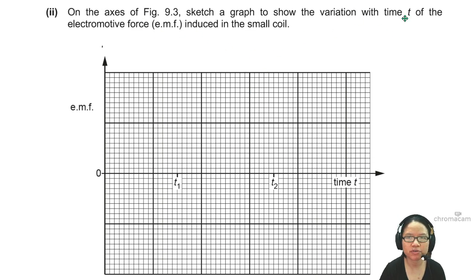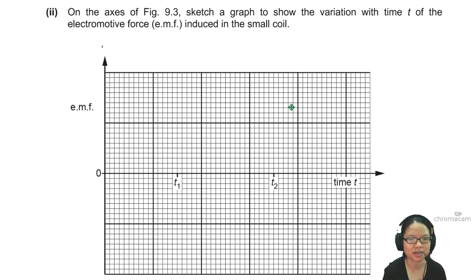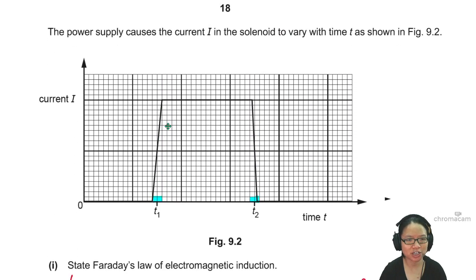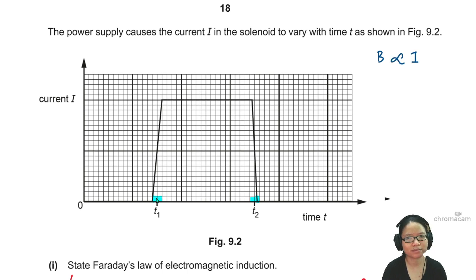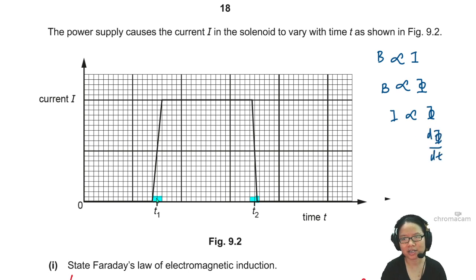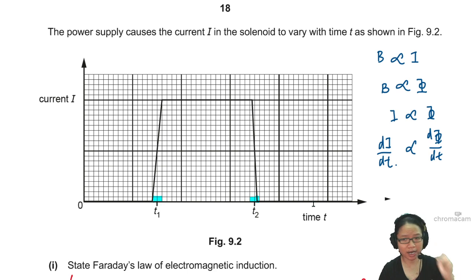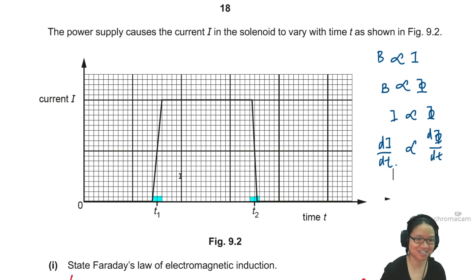Sketch the variation of the EMF induced in the small coil. EMF will only be induced if there is a change in current, because when the current changes, there's a change in flux — B is proportional to I, and B is also proportional to flux. So I is proportional to flux, which means dflux/dt is also proportional to di/dt, which is the gradient of the current graph. The only time di/dt is not zero is at T1 and T2, and since it's a straight line, the gradient is constant.